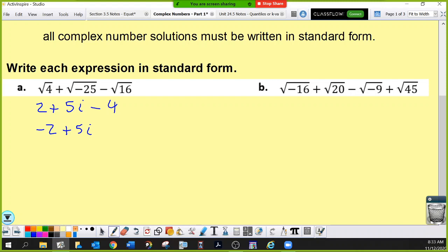So, we were just reviewing, could you reduce radicals and can you combine like terms? So, part b. 16 is a perfect square. So, what is the square root of negative 16? 4i.